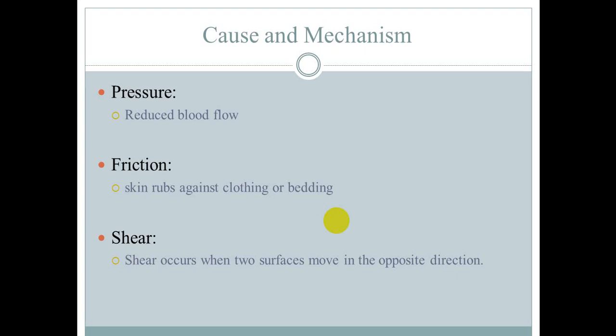The second cause is friction — a condition where the skin rubs against a surface. The third cause is shear, which is the condition where two surfaces move in opposite directions. When force is applied in opposite directions, this creates shear.